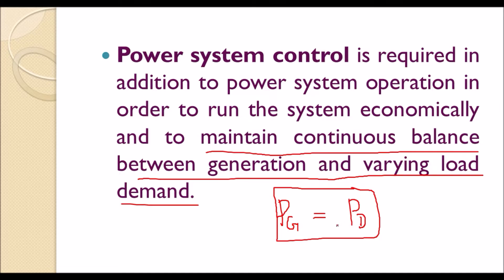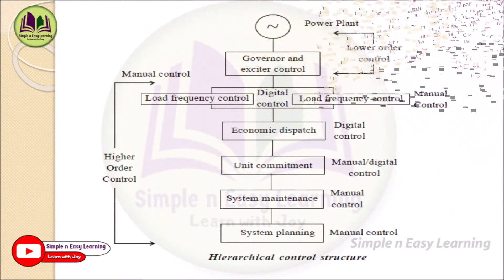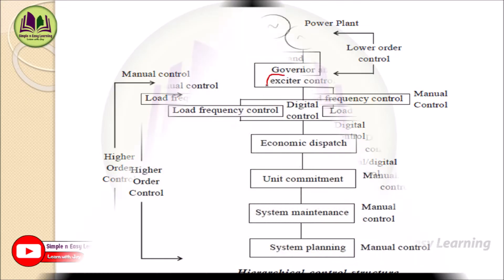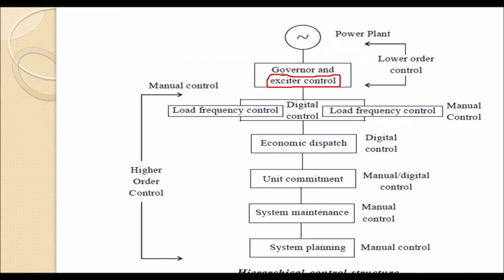The power balance equation — generation equals demand — requires power system control. The main control operations are frequency control and voltage control. These form a hierarchical control structure. A power plant has a governor and exciter control mechanisms. The exciter controls the excitation of the generator by varying field current, thereby controlling voltage. The governor performs speed control: if frequency changes, the speed is adjusted to bring frequency back to its normal value.